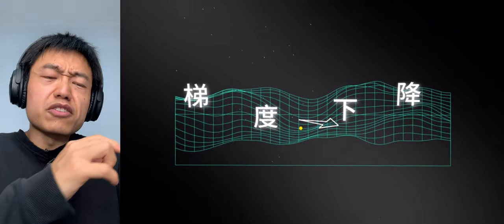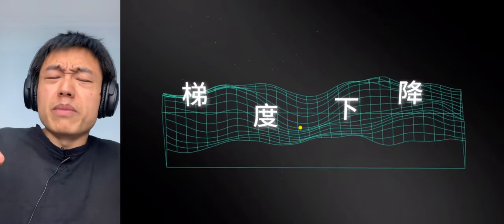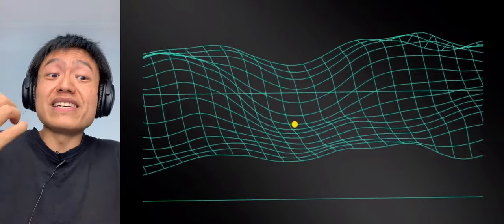Gradient descent is a first-order iterative optimization algorithm for finding a local minimum of a differentiable function.